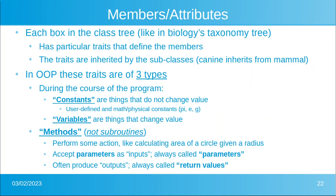Let's talk about members, also called attributes. Each box in the class tree, like in our biology tree, has particular traits that define those members. For example, every mammal produces milk and has teats — that's actually where the word 'mama' comes from, because the young are nursed by the mother. That is a particular trait that defines every member that is a mammal, and these traits are inherited by all of the subclasses. So dogs, cats, cows, humans, and horses all inherit from that definition of mammal, and every one of those animals nurses its young with milk.